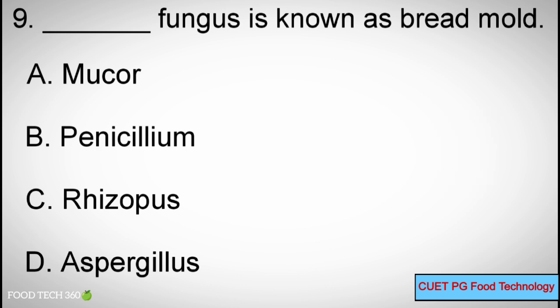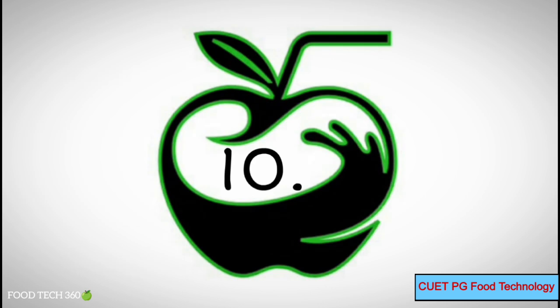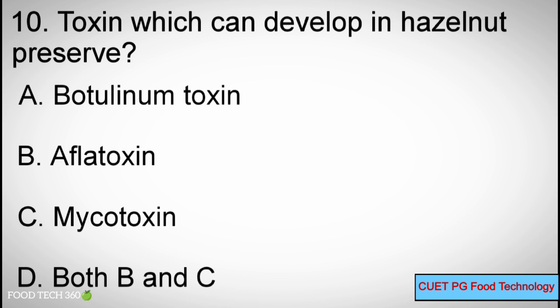Question number 10: Which toxin can develop in hazelnut preserve? Options: A) Botulinum toxin, B) Aflatoxin, C) Mycotoxin, D) Both B and C. Correct answer: A) Botulinum toxin.